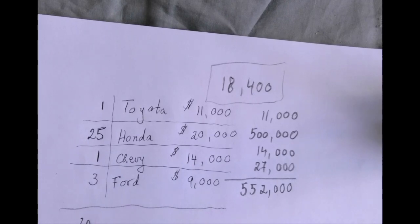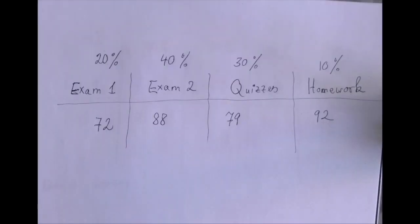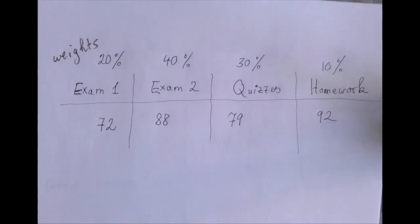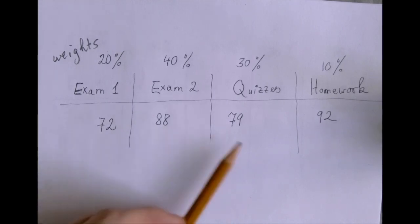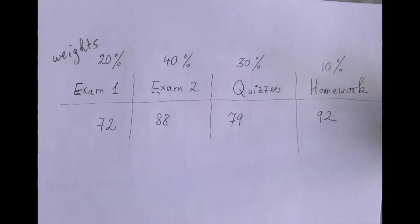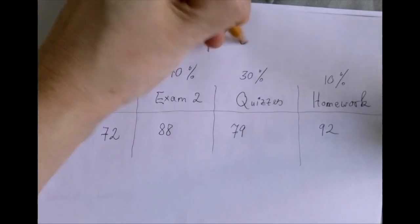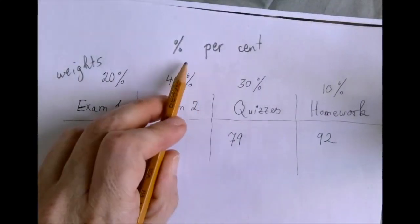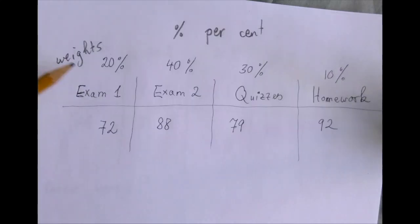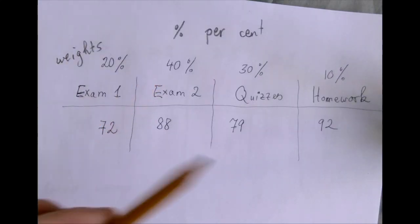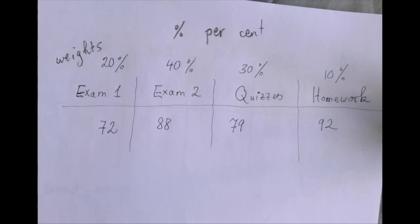Those were all regular averages. Now let's start with weighted averages. Suppose we are taking a class. These are called the weights — they determine how heavily a grade counts. We have just four different numbers, but we're not going to add and divide by four because we want some numbers to matter more. That is expressed in percent: 20% for the first exam, 40% for the second, 30% for all the quizzes, and 10% for the homework.